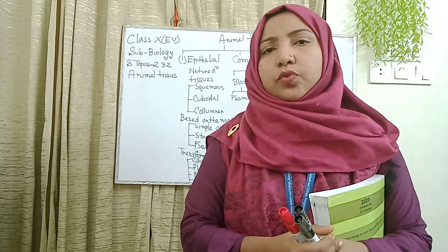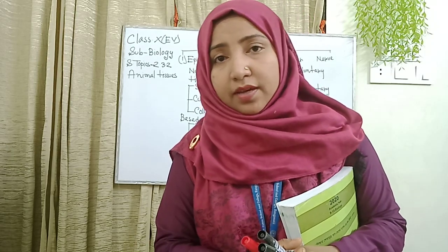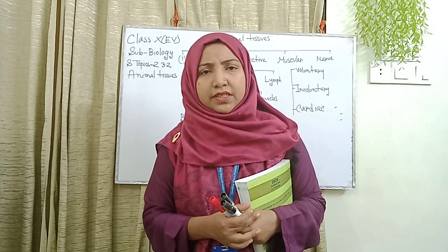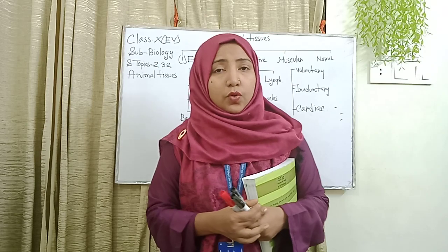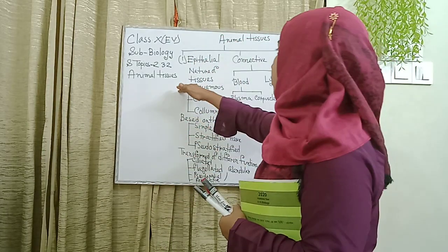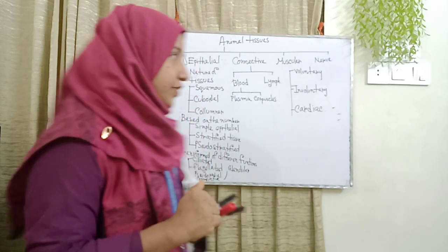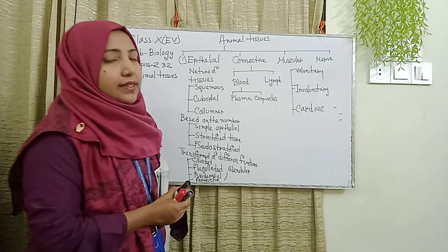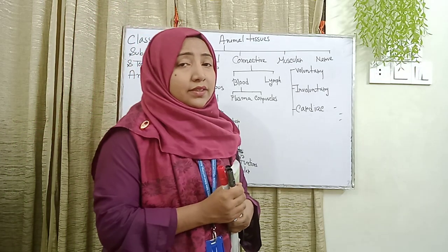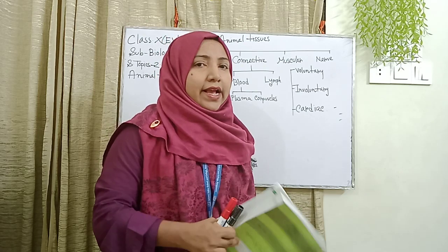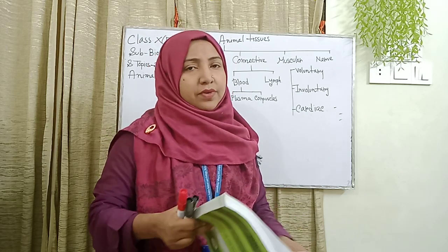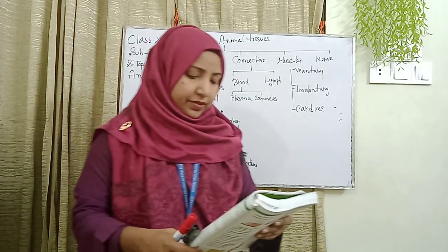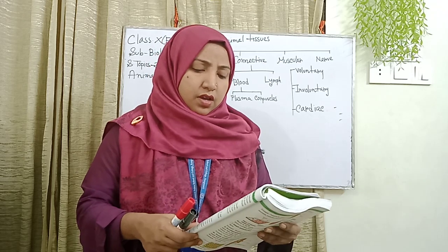In the previous class we explained about plant tissue — plant tissues are of two types. But animal tissues, on the basis of their multicellular structure, are of four types. The first is epithelial tissue, the second is connective tissue, the third is muscular tissue, and the fourth is nerve tissue. Today I will explain each of these. Let's begin with the first — epithelial tissue. Please open your book to page number 32.